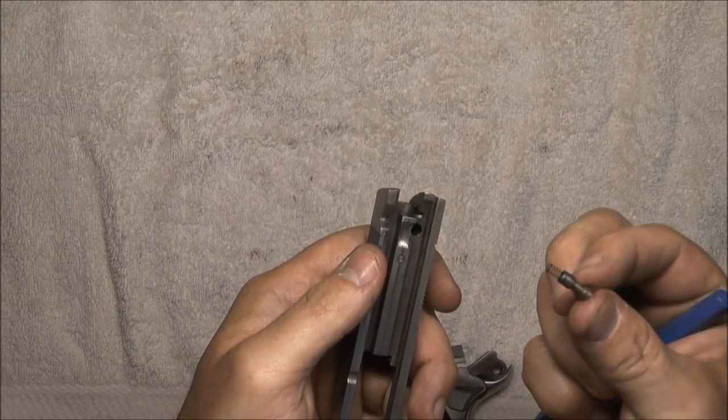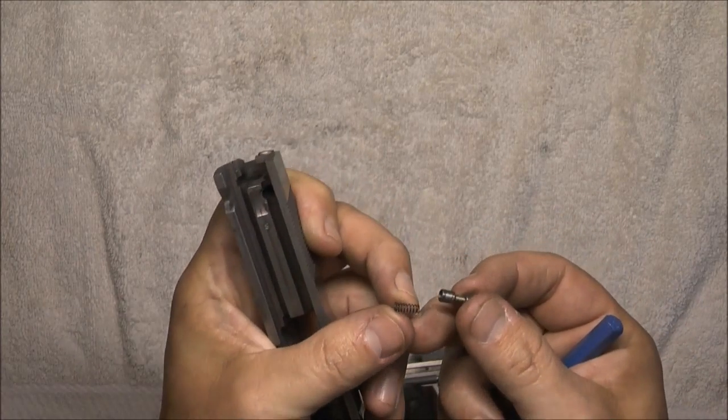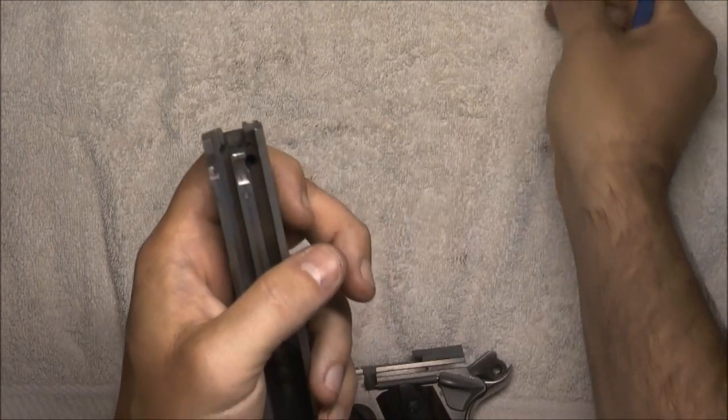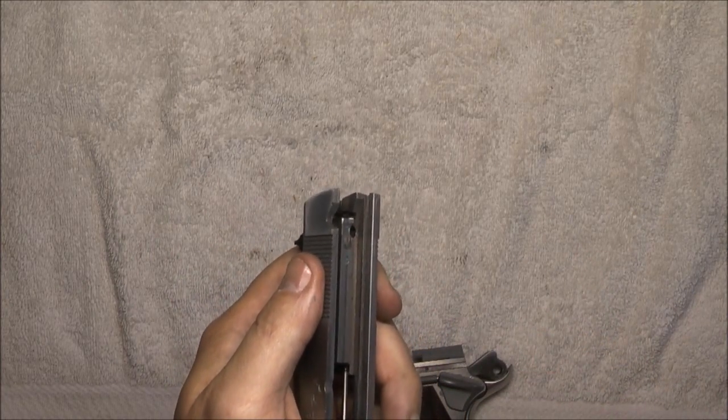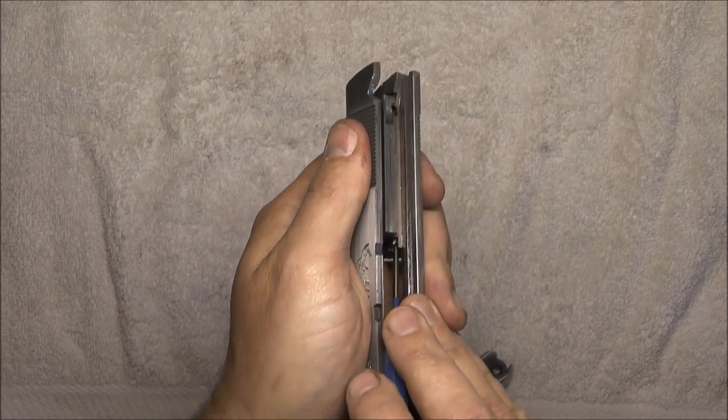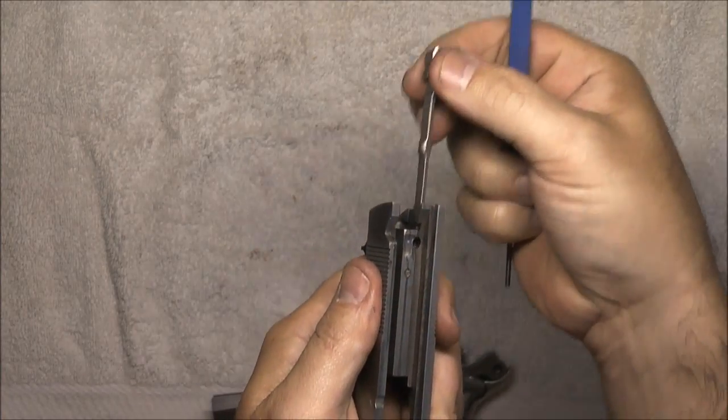So anyway, once we get that firing pin block out, that little plunger out, these are the two Series 80 parts in the slide. This is the only difference from the 70 and the 80 is these two little parts right here. Once we get that out, we can push this extractor out. Sometimes these can be difficult to push out. Just depends how clean the gun is. This gun was recently cleaned, so this one should pop out fairly easily, and it did.